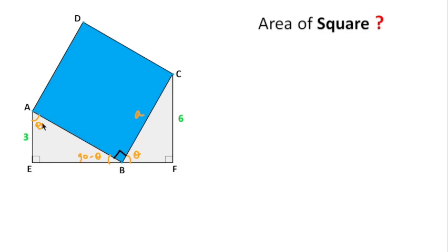And we can write in triangle BCF, sin theta equals perpendicular over hypotenuse. Perpendicular is 6 and hypotenuse is the side length of this square, that is a units.